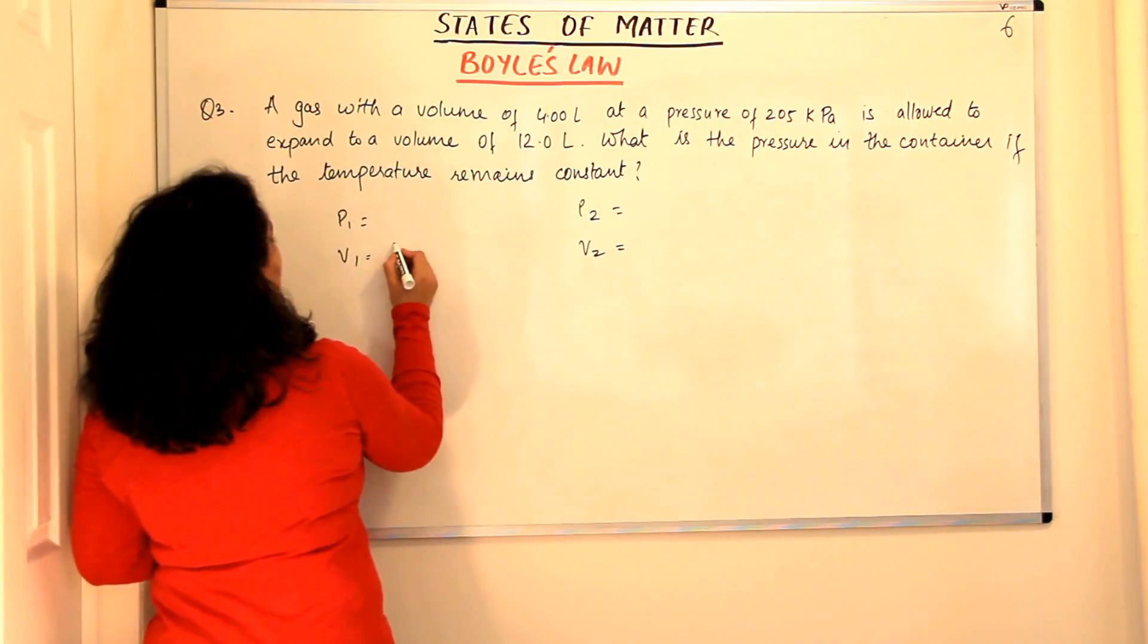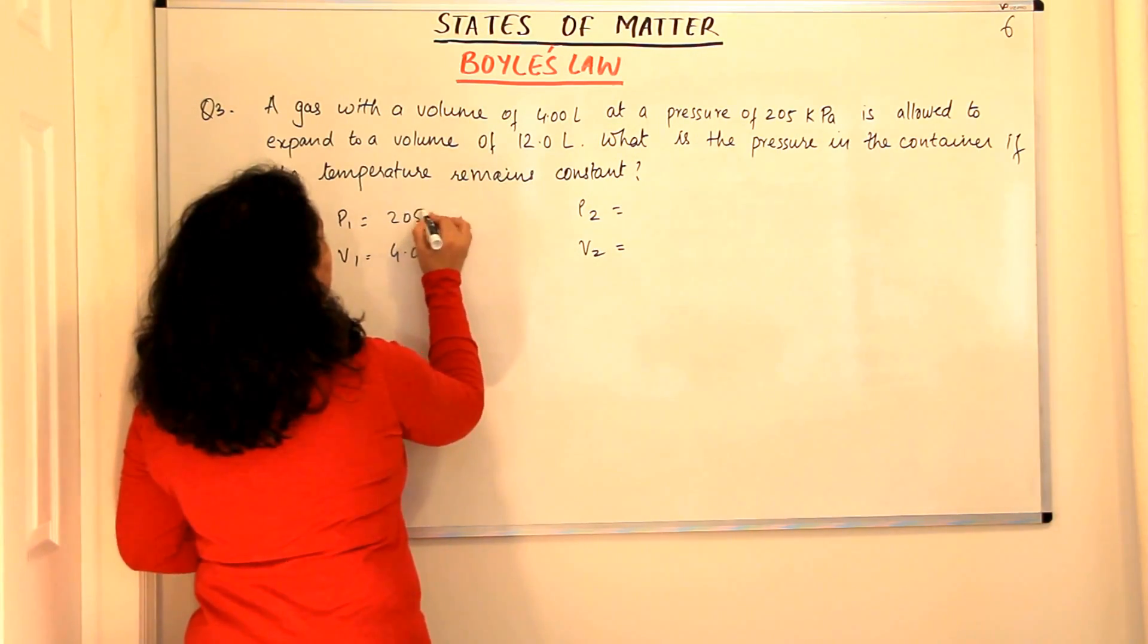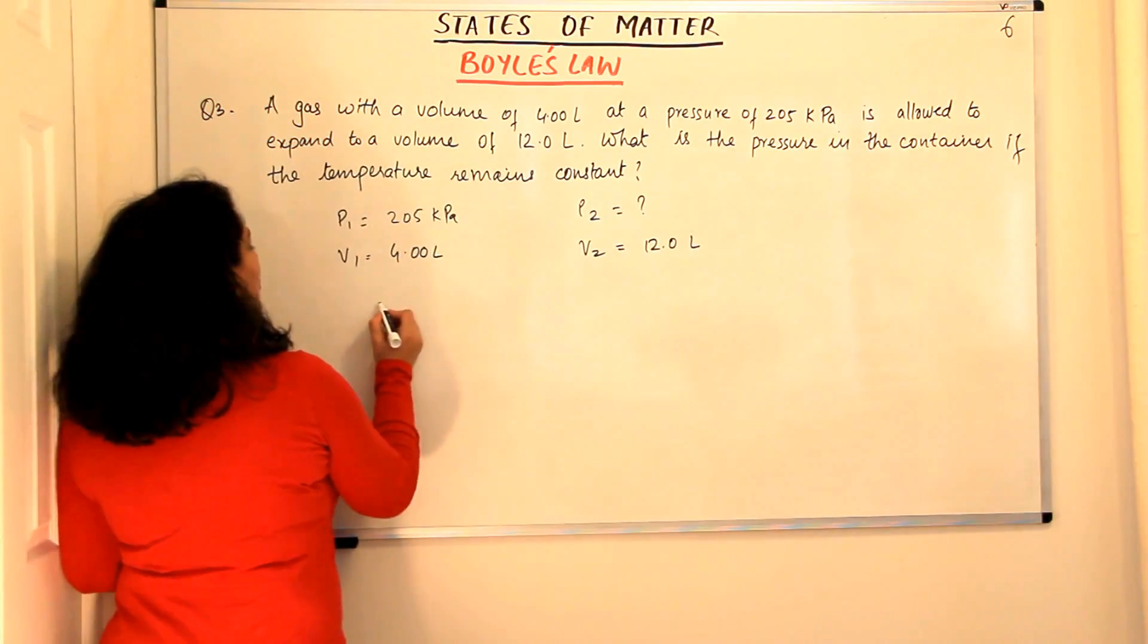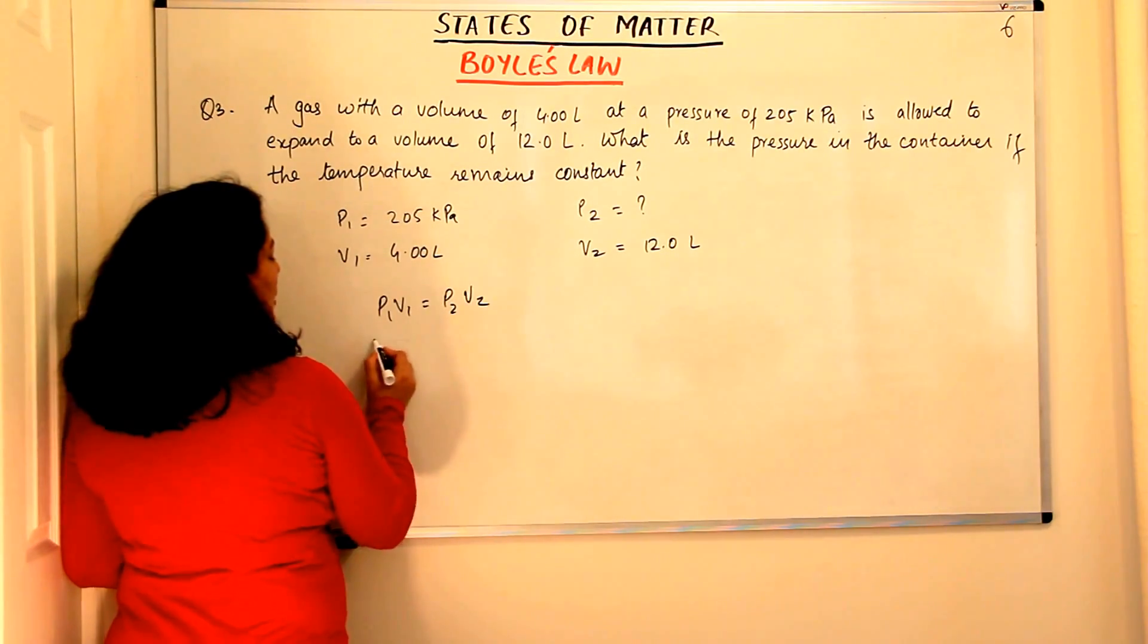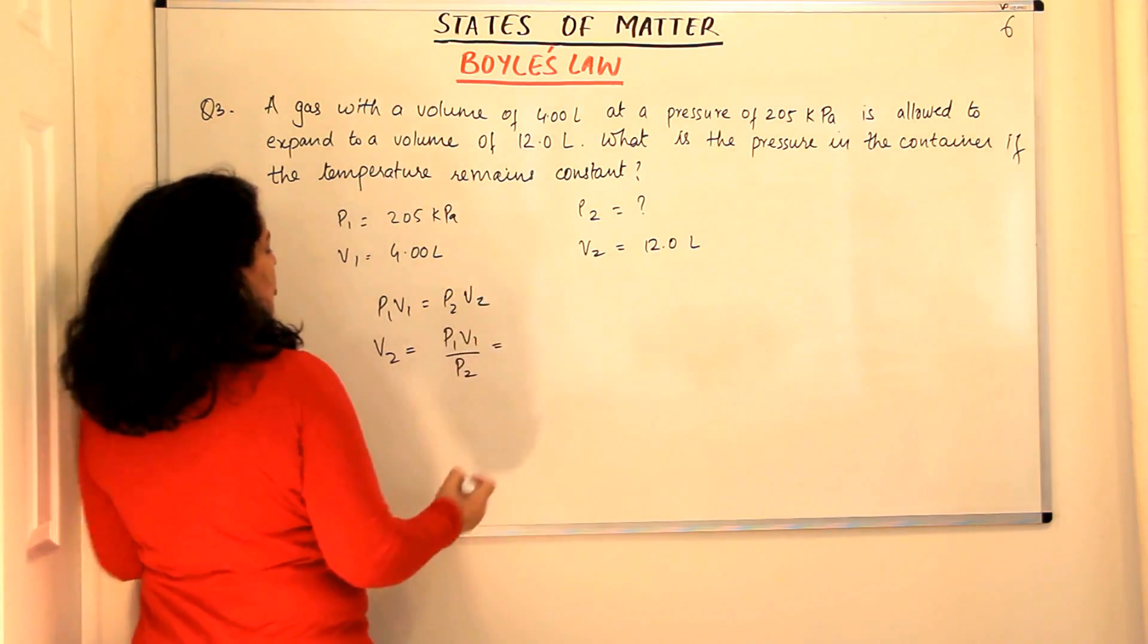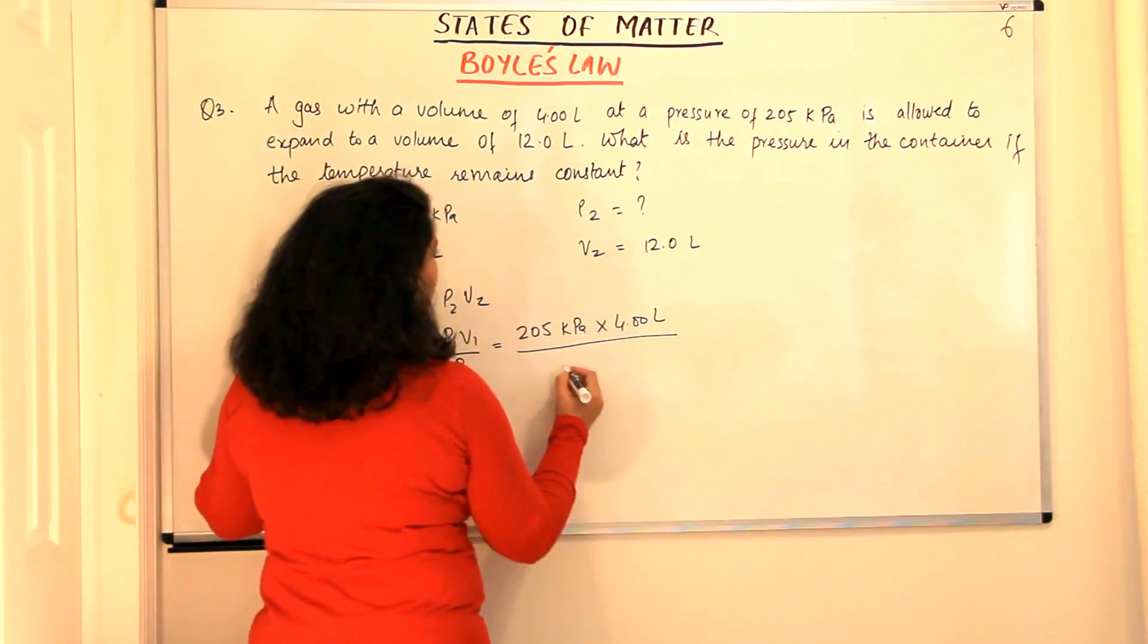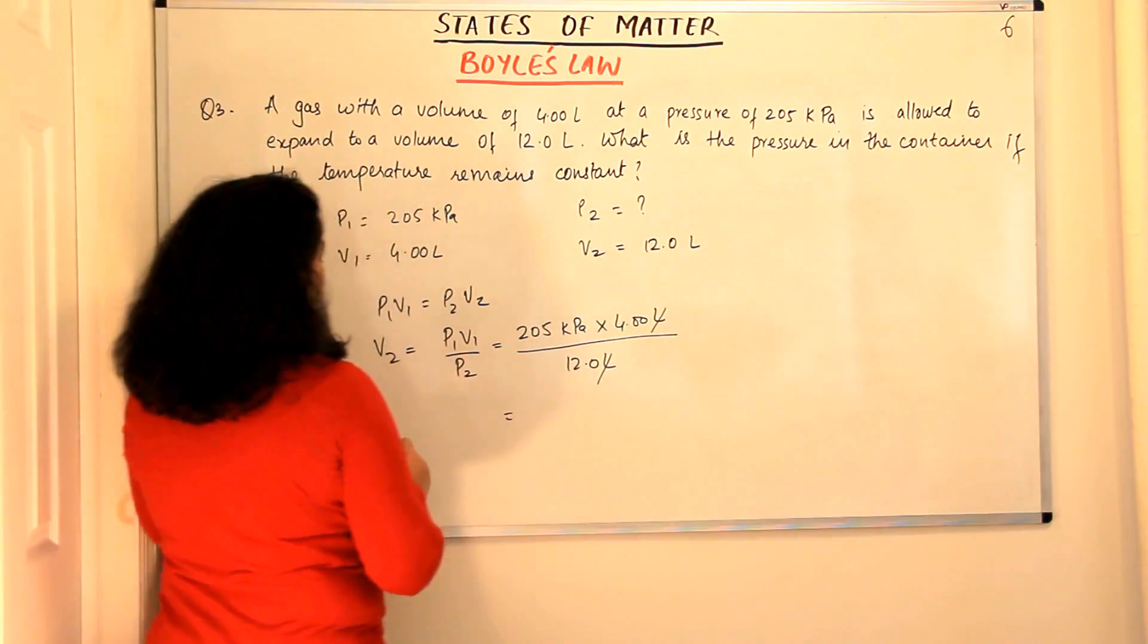P1, 4.00 litres is the volume and the pressure is 205 kilopascals. V2 given to us is 12.0 litres and P2 is required of us. We know P1V1 is equal to P2V2 and we are looking for V2. So, if we are looking for V2, V2 would be equal to P1V1 upon P2. Let us substitute the values now, 205 kilopascals into 4 litres upon 12.0 litres. Now, the litres and the litres get cancelled.